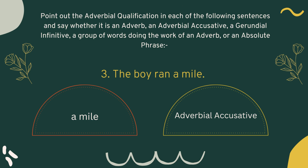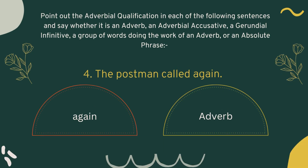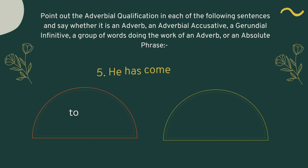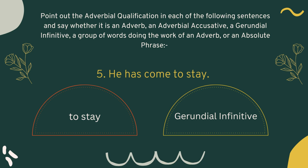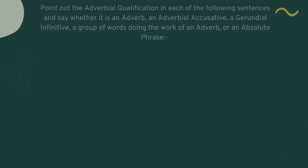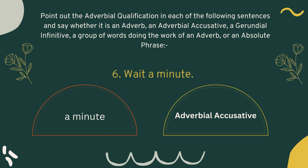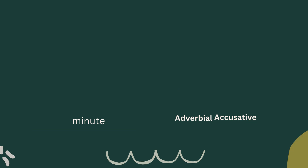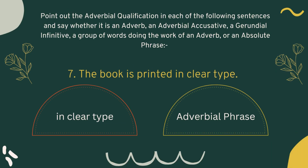Number four: 'The postman called again.' Here we have only one word, 'again', and this is an adverb. Number five: 'He has come to stay.' 'To stay' is the adverbial qualification and this is a gerundial infinitive. Number six: 'Wait a minute.' 'A minute' is the adverbial qualification and this is an adverbial accusative.